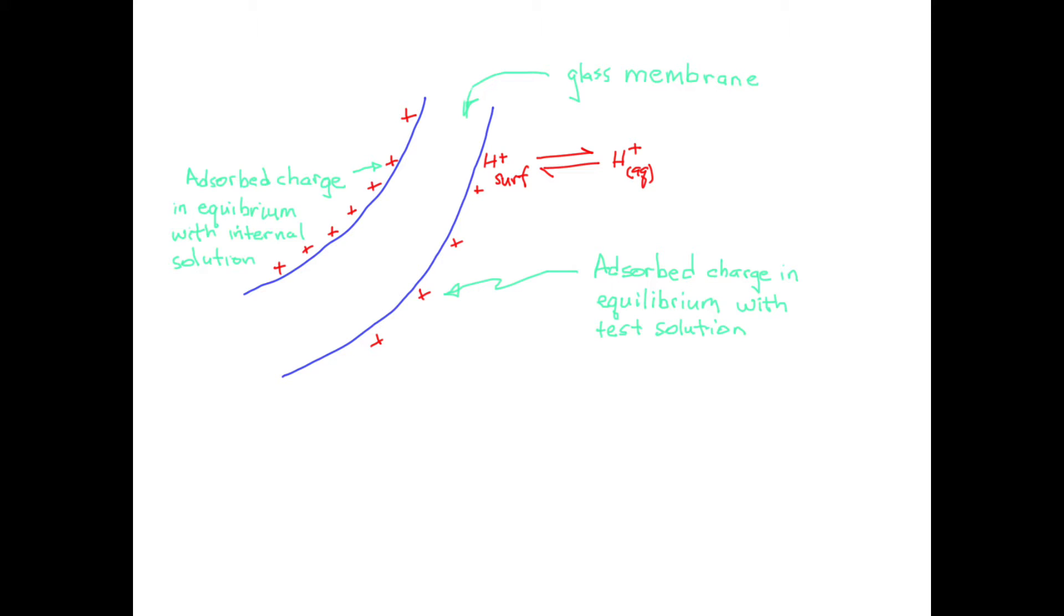The amount of charge that absorbs onto the surface depends upon the concentration of ions in solution. The concentration on the inside of the bulb is kept constant, so the charge that absorbs there is also constant. Ions in the outer solution come into equilibrium with the outside surface. A difference in hydrogen ion activity in the two solutions leads to a difference in charge on the two sides of the glass membrane, and therefore a voltage difference across the membrane.